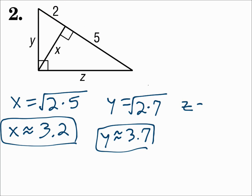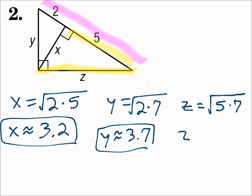For Z, Z is the other leg. The leg uses the part of the hypotenuse on that side, the 5, and the whole hypotenuse, 7. So Z is the geometric mean of 5 and 7, which is about 5.9. Make sure you match these up correctly — whether you're using the altitude or one of the legs, use the correct formula.